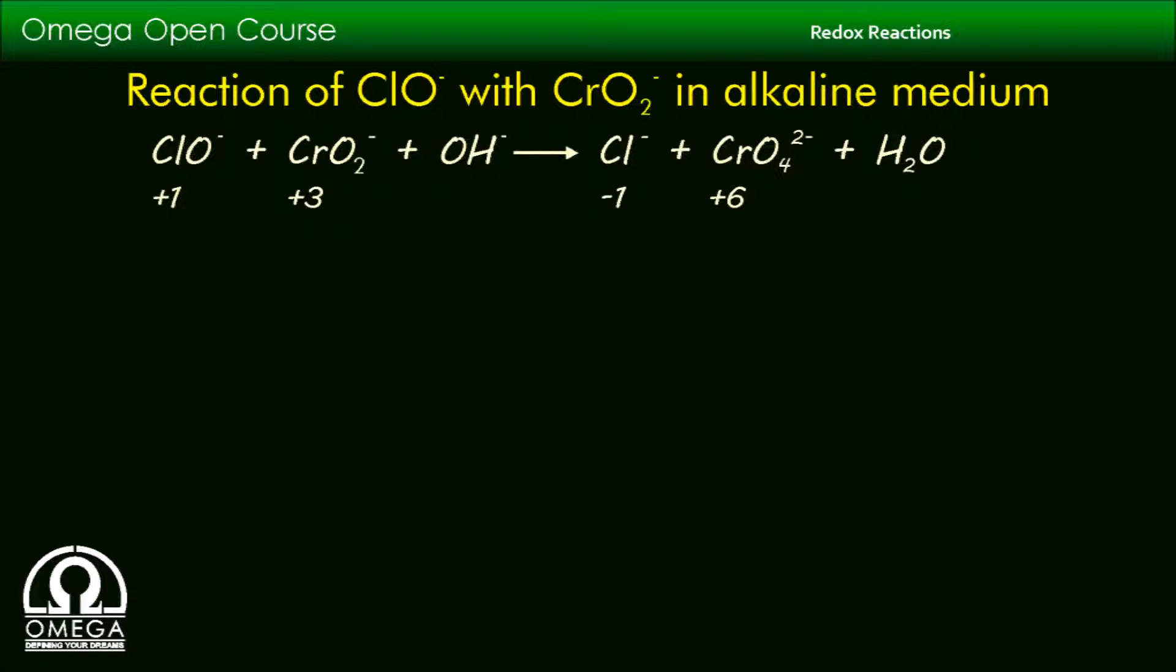Oxidation number of Cr atom in CrO₂⁻ is +3 and that in CrO₄²⁻ is +6. Oxidation number of O and H atoms is -2 and +1 respectively.